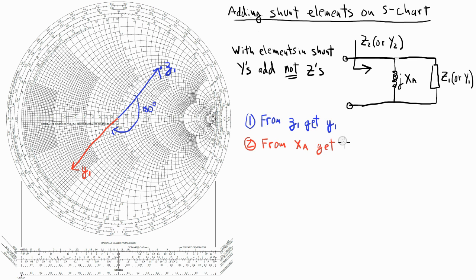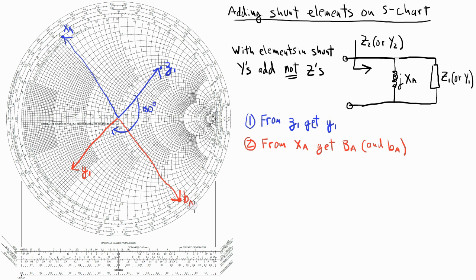Step 2 is going to be to find BA from the reactance XA, where BA is my susceptance. I can do that either mathematically by just taking the inverse of XA, but I can also do that on the Smith chart. So let's say that on the Smith chart, that's my XA point. To find BA, I'm going to rotate the gamma vector by 180 degrees and end up on the Y chart — so there's my BA, which I can just read off the Y chart.